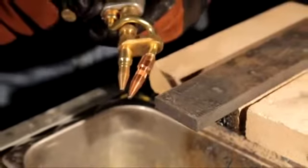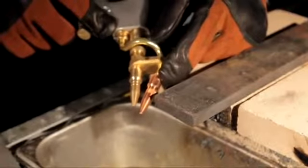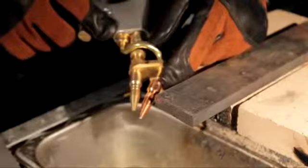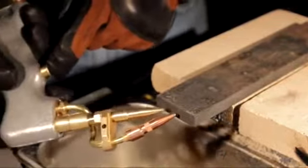To cut half inch plate, I bump the oxygen only up to 15 pounds. If I'm cutting one inch, I'd be at 21 pounds. Still four on the acetylene. So we're going to preheat it. Once the metal turns red, pull the trigger.